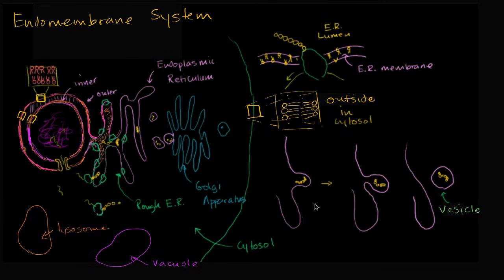We call this area the transitional ER. So this area right over here, we would call the transitional endoplasmic reticulum. Transitional ER is this place where these proteins are being budded off.